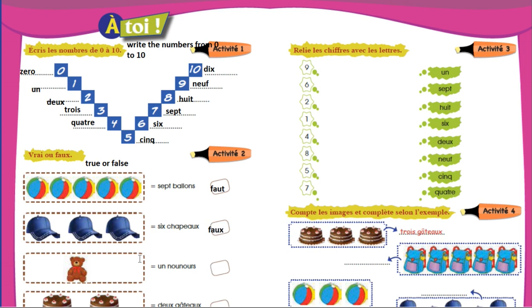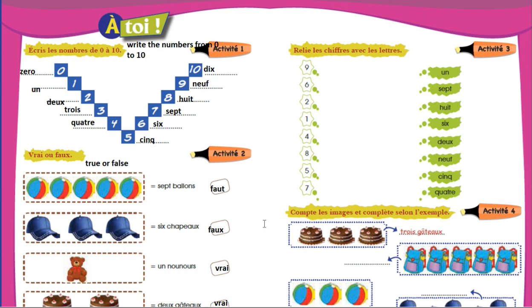Then you can see nounours — a teddy. Un nounours — let's count: un. It is vrai. Next one. Last one — le gâteau. You can see there is le gâteau. So it is vrai. Done this one.